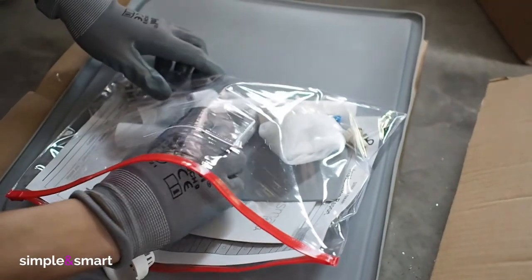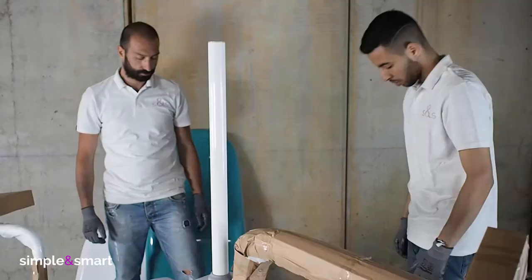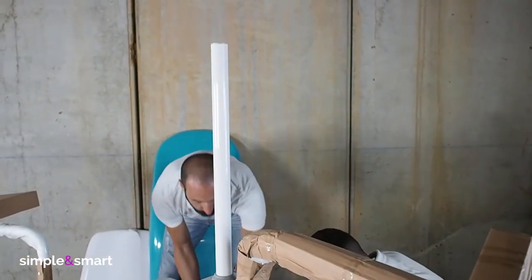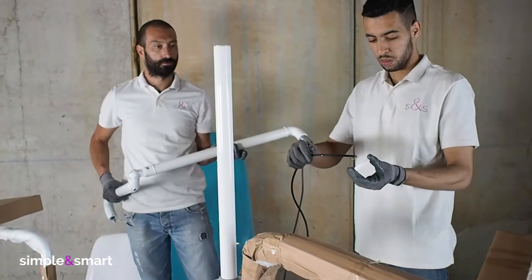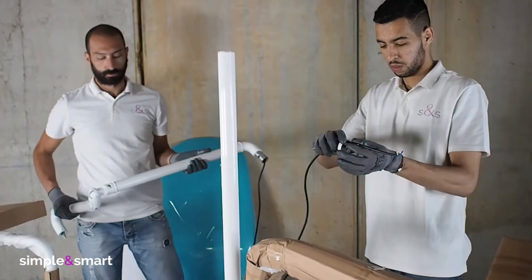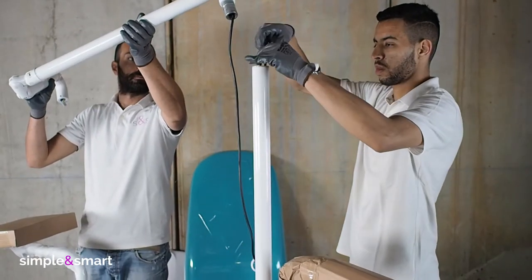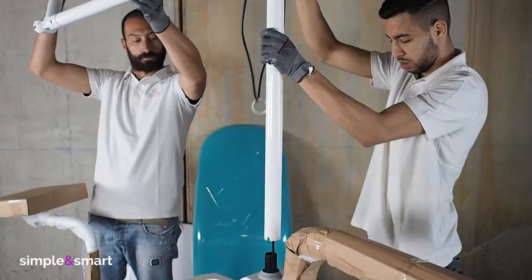Place it on the lamp vertical pole to cover the joints at the base. Use the white plastic ring to join the lamp's arm to the lamp's pole.